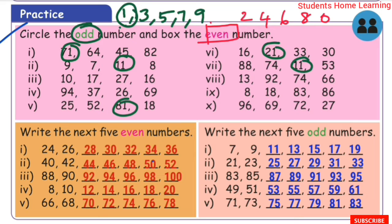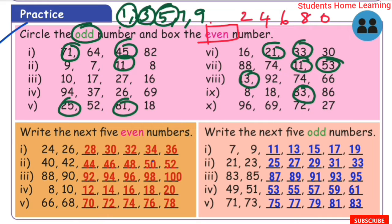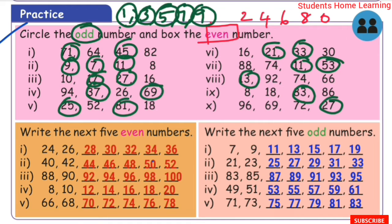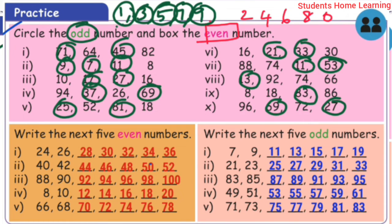What numbers have 3 in the ones place? For example: 33, 53, 13, 83 — those are odd numbers. What numbers have 5 in the ones place? For example: 45, 25 — those are odd. What numbers have 7 in the ones place? For example: 7, 17, 27, 37 — odd numbers. What numbers have 9 in the ones place? For example: 9, 69 — those are odd numbers.